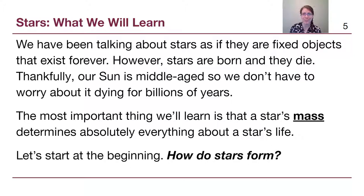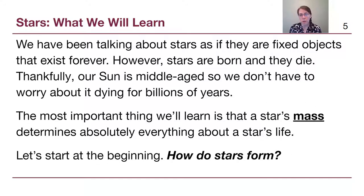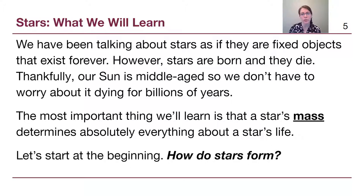Helpfully for us here in our solar system, the Sun is middle-aged. It is about five billion years old and will live for another five billion years without doing much of anything except shine brightly in our skies. What we will talk about over the next set of videos is that the most important piece of information we can learn about a star is its mass — that will tell us everything that's going to happen to a star as it starts to run out of fuel. But let's start in Chapter 20 with a description of how stars form and what they are able to form out of.